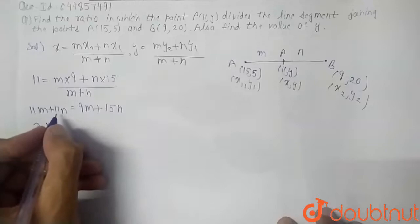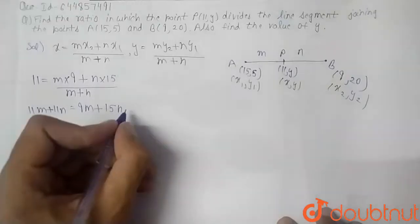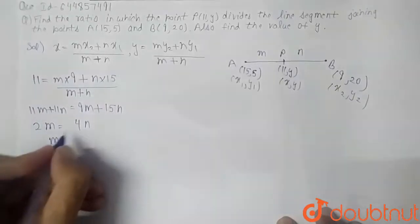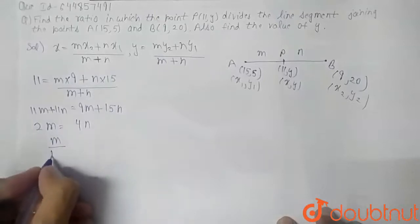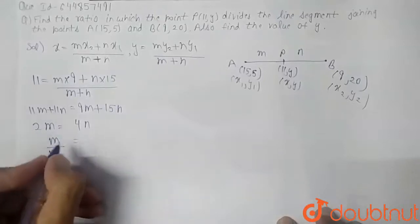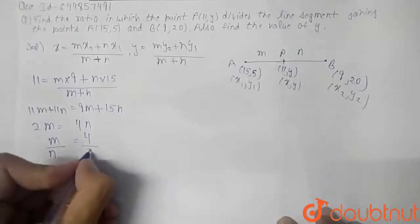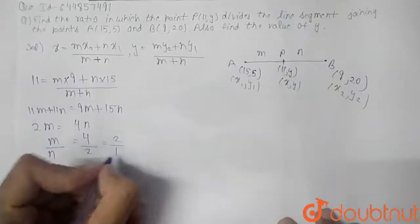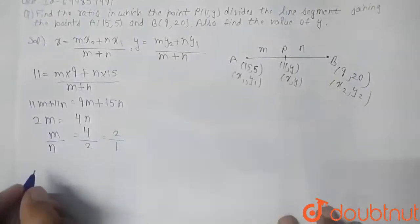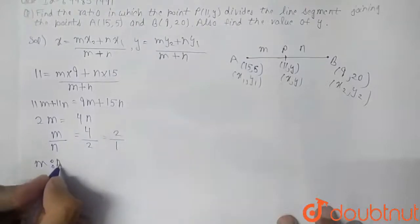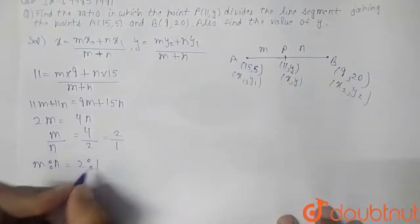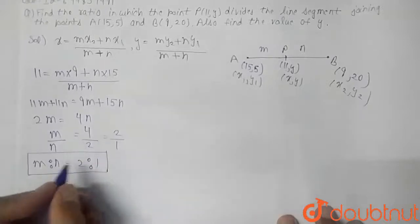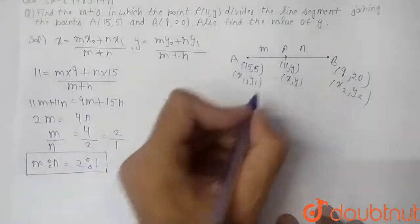From 2m = 4n, we get m/n = 4/2 = 2/1. So the ratio m : n = 2 : 1. This is our first answer — point P divides the line segment AB in the ratio 2 : 1.